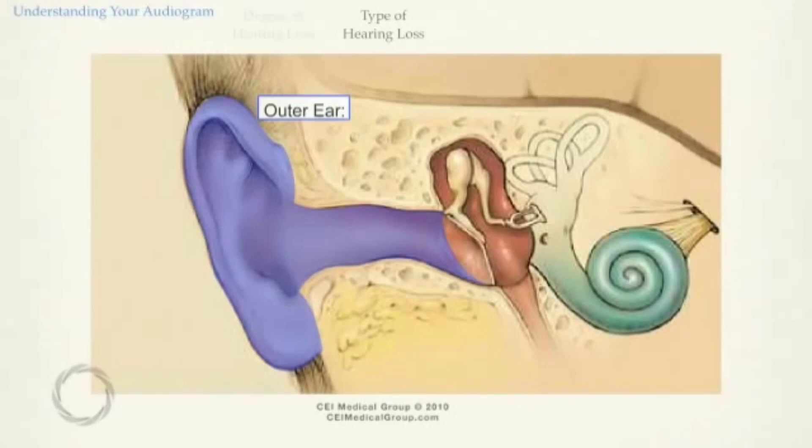Sound is carried through the outer ear to the middle ear, which houses the three smallest bones of the human body: the malleus, the incus, and the stapes.